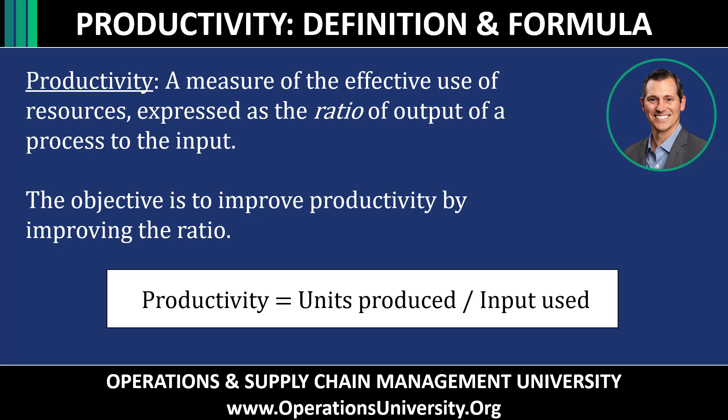Productivity is a measure of the effective use of resources, expressed as the ratio of the outputs of the process to the inputs. The objective is to improve productivity by improving the ratio. The formula is simple: productivity equals units produced — otherwise known as the outputs — divided by the inputs used. Productivity ratios can be useful for planning workforce requirements, scheduling equipment, and financial analysis.